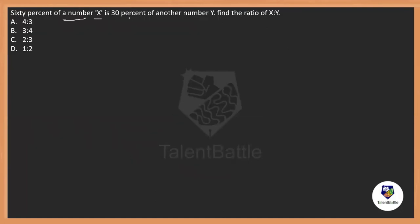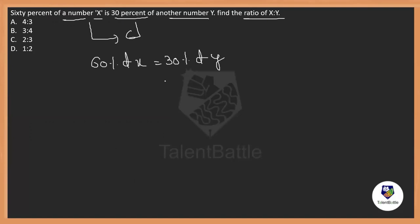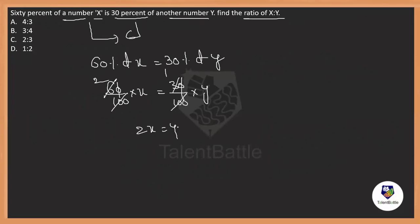60% of a number X is 50% of another number Y — actually, 60% of X equals 30% of Y. So (60/100)×X = (30/100)×Y. Cancelling the 100s and simplifying: 2X = Y. Therefore X/Y = 1/2, meaning the ratio of X to Y is 1 to 2.